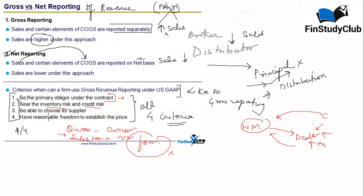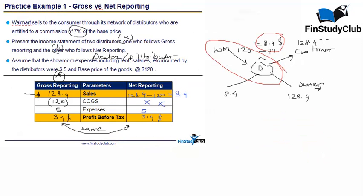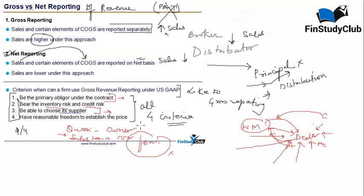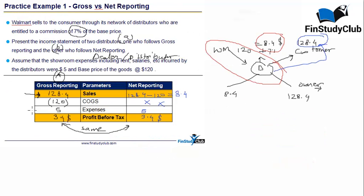The third and very important condition is that the dealer should be able to choose its suppliers — today buying from Walmart, tomorrow from someone else. The point is who is appointing whom: is the manufacturer appointing the dealer, or the dealer appointing the manufacturer? This identifies the shift of power. The fourth condition is who has decided the selling price to the consumer — if the dealer fixes the price of $128.4, the dealer has control, and the fourth condition is satisfied. Only if all four conditions are met can the dealer use gross reporting.